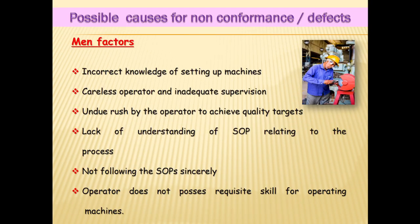Let's see the possible causes for a non-conformity — that is a defect or problem — due to the Man factor. Men may have incorrect knowledge of setting up machines, or there may be a careless operator or inadequate supervision by the supervisor. There may be undue rush by the operator to meet quality targets, lack of understanding of the SOP (standard operating procedure) relating to a process, not following SOPs, or the operator does not possess the required skill for operating machines.